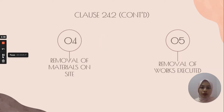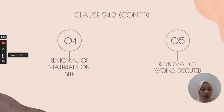Number four is the removal of materials on sites. The materials removed must be from the work intended originally. For example, the contractor bought ceramic tiles to be used as floor finishes as stated in the contract, but then the SO gives instruction to use pocket instead. Therefore, the cost for removal of ceramic tiles bought onto the site can be claimed under variation of works. Number five is the removal of works executed. Works to be removed must have been done according to the contract originally. The cost required to remove the works executed can be claimed.